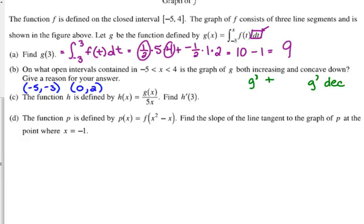Let's look at C. C says the function H is defined by G of X divided by 5X by H prime of 3. Check it out. Here's where we have to remember how to do the quotient rule and stuff like that with functions mixed in there. So, H prime of X is, you got to use the quotient rule because you got a variable in the top and in the bottom. Low D high minus high D low all over low squared.